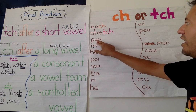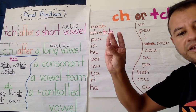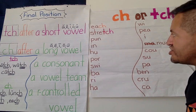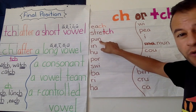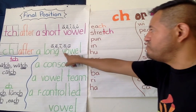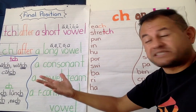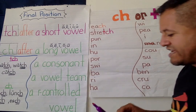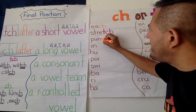We have P-U-N — "punch." That last letter is not a vowel. Is it a long vowel? Nope. Is it a consonant? Yes — N is a consonant. So I know N is going to be C-H. Punch — C-H, "punch."